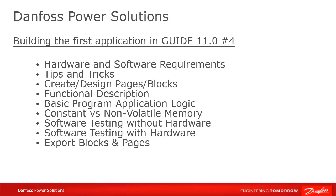We'll cover how to compile and check errors with compiler messages, the use of non-volatile memory instead of a constant, different tools for testing the logic of the application like service tool, debugger, and test tool. And how to use the My Code tab to quickly select the graphical and textual code you have created and use frequently in your project, which you can also share with others outside Guide.